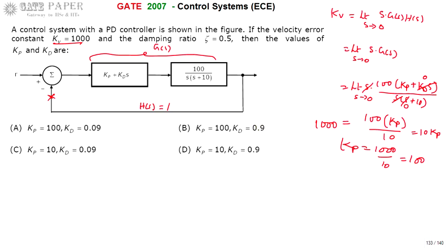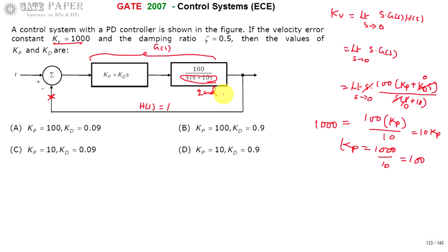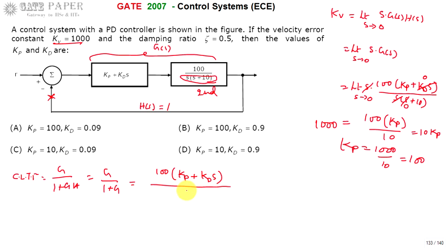Next, we need to calculate the Kd value, which can be obtained from the damping ratio zeta. This is a second order system because it consists of two poles. The closed loop transfer function is G divided by (1 plus GH), which equals G divided by (1 plus G) since H(S) equals 1. G is the product of the two blocks: 100(Kp plus Kd·S) divided by S(S plus 10), over 1 plus 100(Kp plus Kd·S) divided by S(S plus 10).